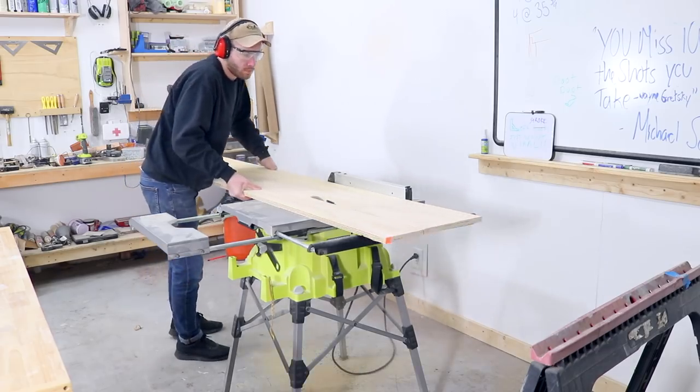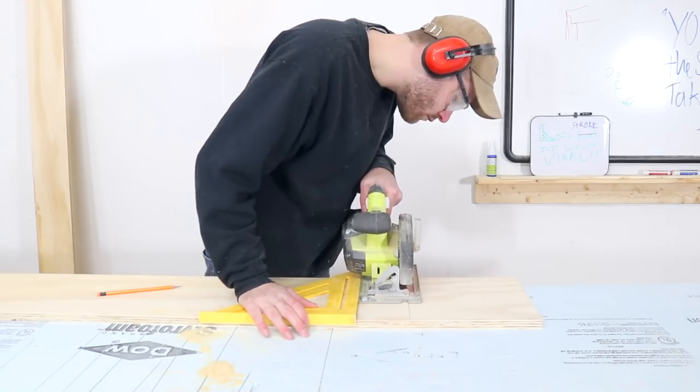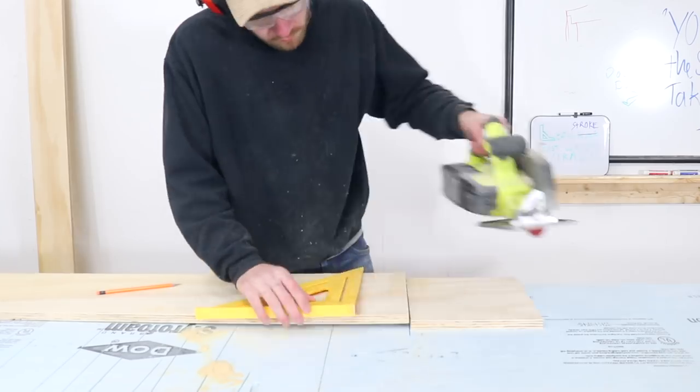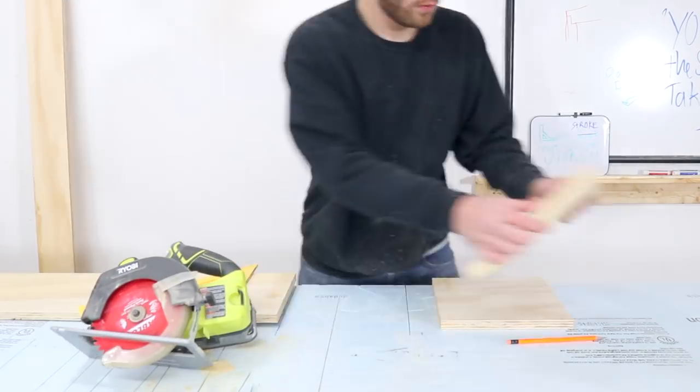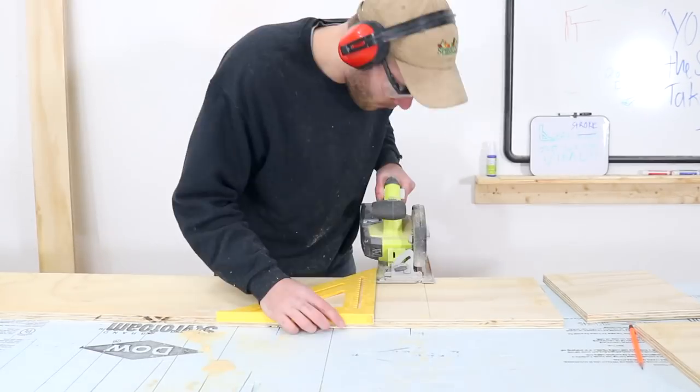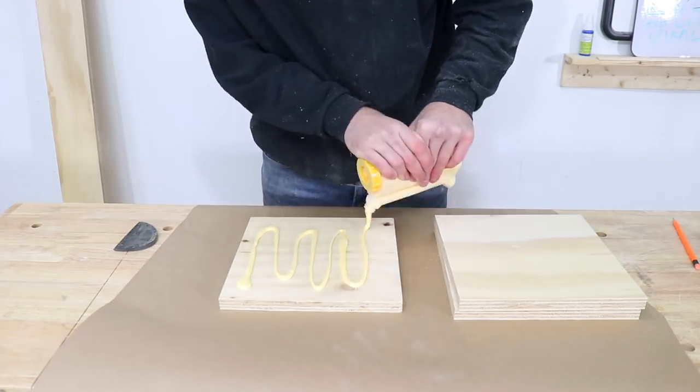So I cut this plywood to width on my table saw, then I used my circular saw to cut three squares all the same size and after all my pieces were cut I could assemble my plywood sandwich.